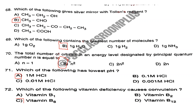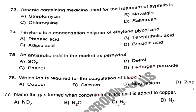Question number 73. Arsenic-containing medicine used for the treatment of syphilis. Answer is Option D: Salvarsan. Question number 74. Terylene is a condensation polymer of ethylene glycol and? Answer is Option B: Terephthalic acid. Question number 75. An antiseptic solid sold in the market as Perhydrol. Answer is Option D: Hydrogen peroxide.